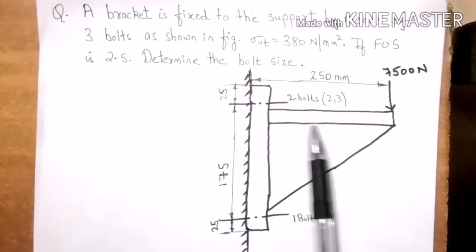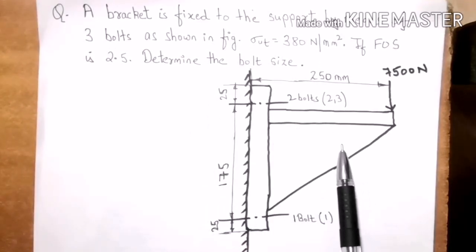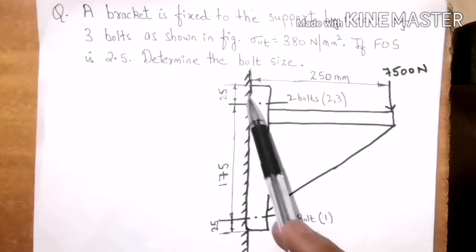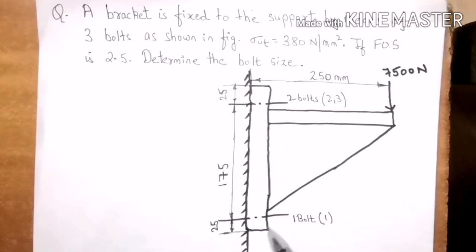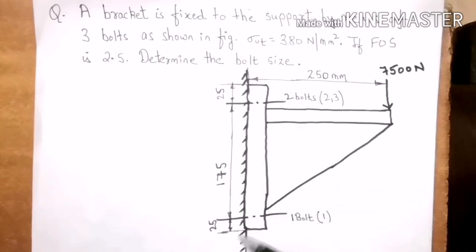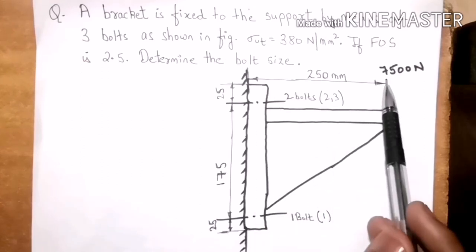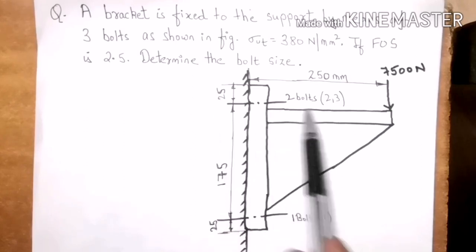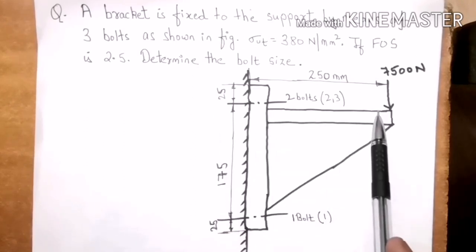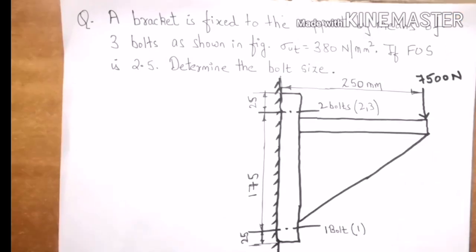As you can see in the figure, there is a bracket which is mounted to a wall by means of bolts. The direction of the load is perpendicular to the axis of the bolts. Before solving this problem, let us understand the effect of the load on this type of joint.